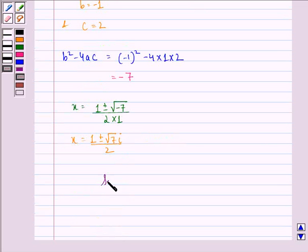Therefore, our solution to this question is 1 plus minus root 7i divided by 2. I hope you understood the question and enjoyed the session. Goodbye.